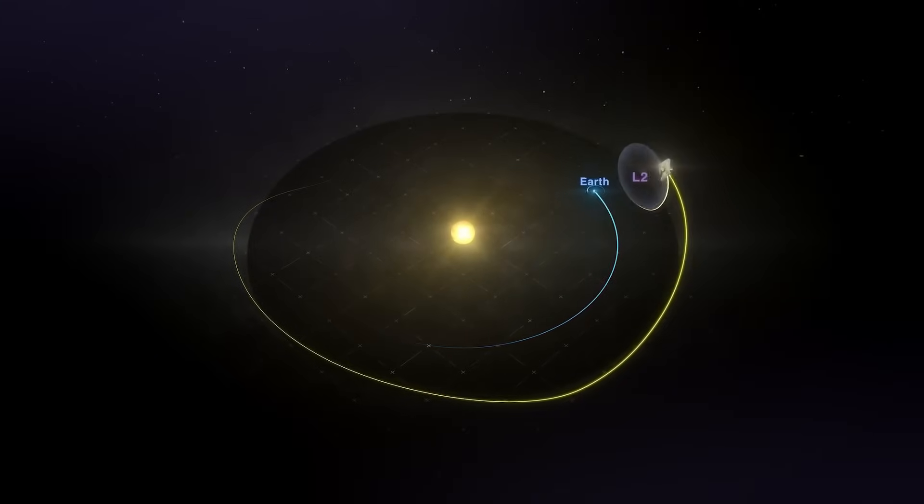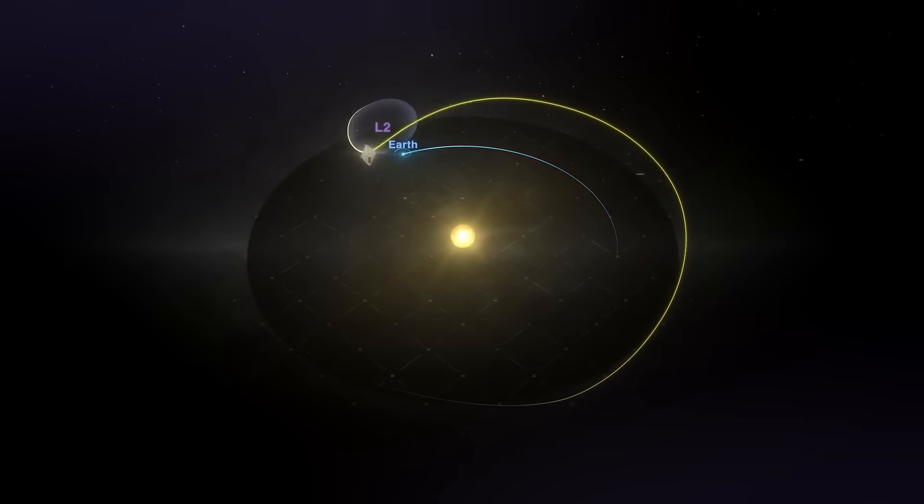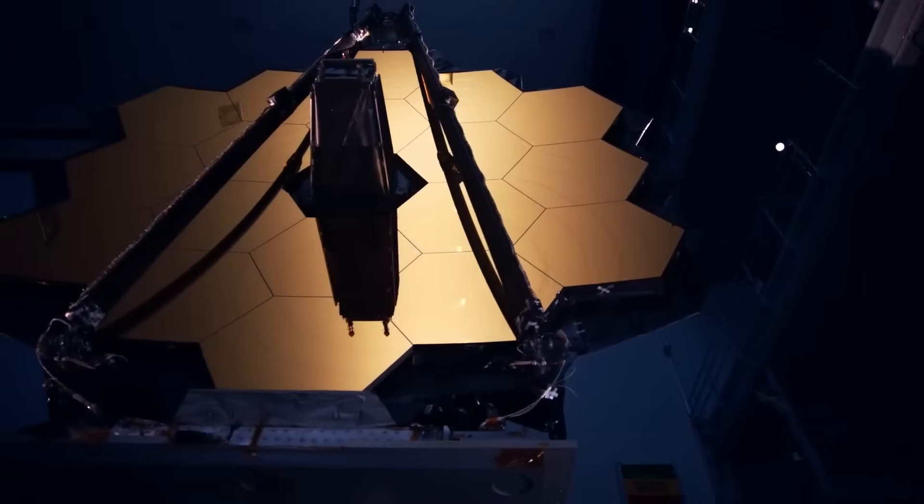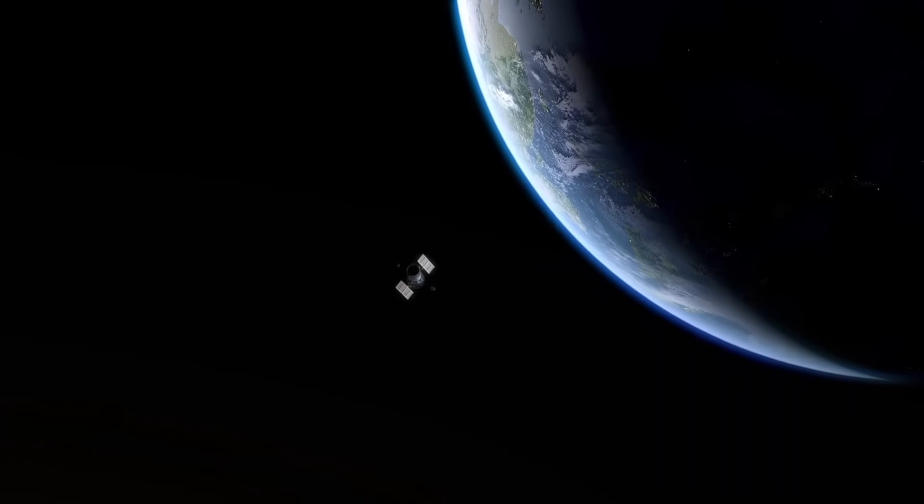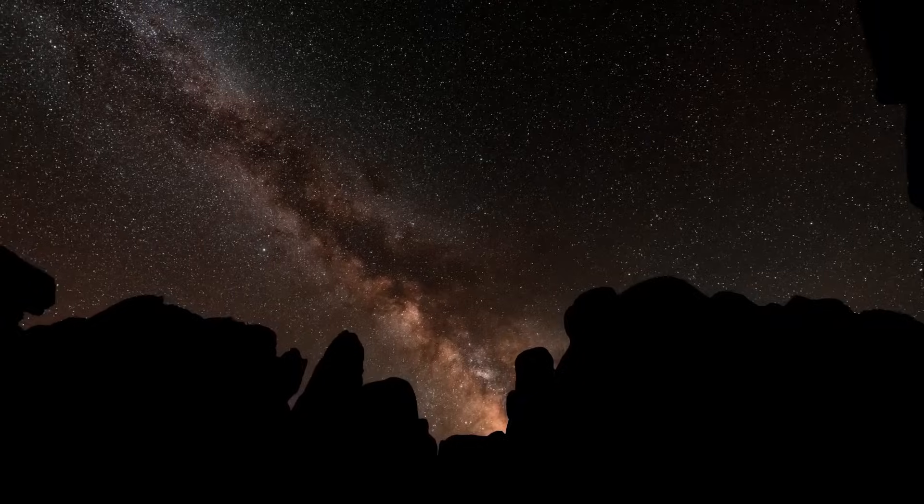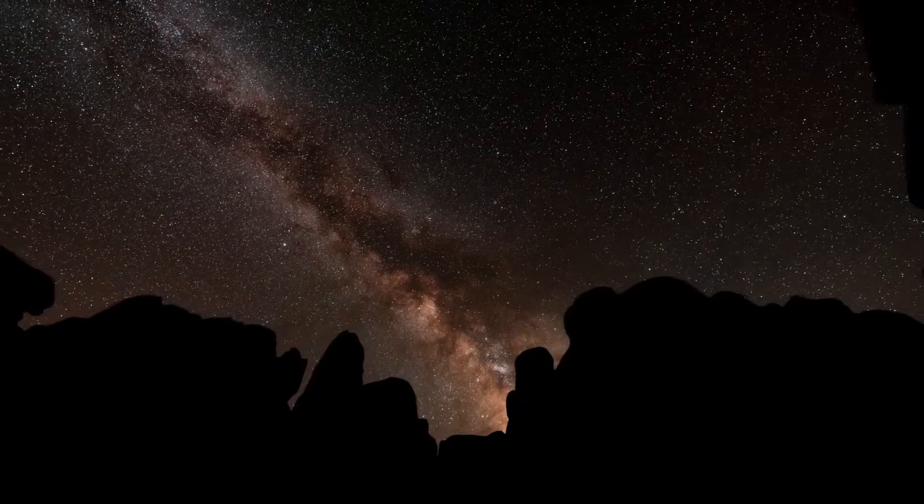The telescope orbits the sun about 1.5 million kilometers, almost 1 million miles, away from Earth at a point called Lagrange Point 2. Its main job? To look deep into space and back in time. Yes, back in time.